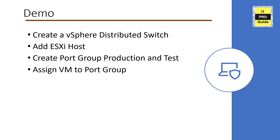Next we're going to see a demo on how to create a vSphere Distributed Switch. For this demonstration I have two ESXi hosts, and we'll add them to the vSphere Distributed Switch, create port groups for Production and Test as we did in the standard switch demonstration, and then assign virtual machines to port groups. The scope of this demo is limited to these tasks — traffic shaping, NIC teaming, and load balancing will be covered in the coming video.